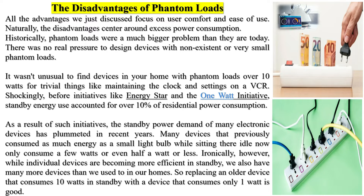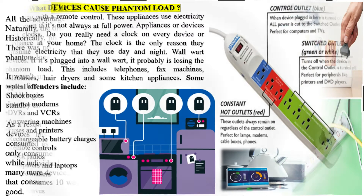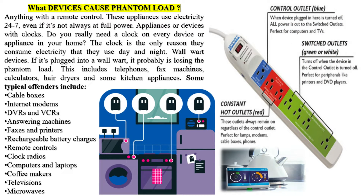Three: unplug charged electronic devices — unplug your cell phone, camera, and any other chargers as soon as the battery is fully charged. Four: use sleep mode instead of a screensaver. If you're leaving your workstation for more than a few minutes, enable the power save or sleep mode on your computer. Five: buy electronics and appliances with the Energy Star label. If you're in the market for a new TV or other electronic device, look for one with the Energy Star label. They use up to 50% less energy than less efficient models, while providing the same performance.